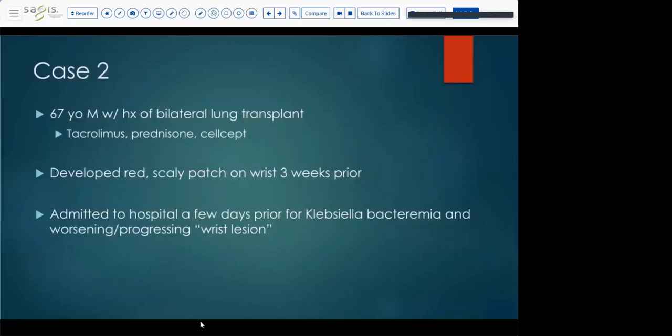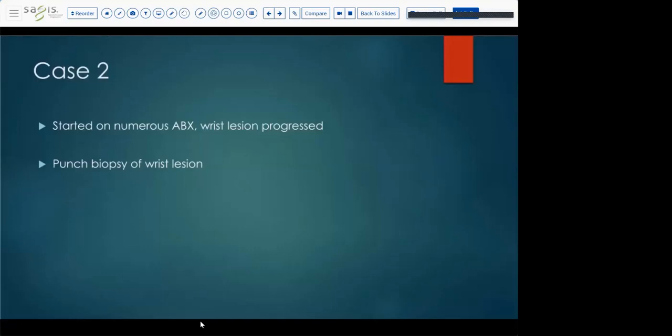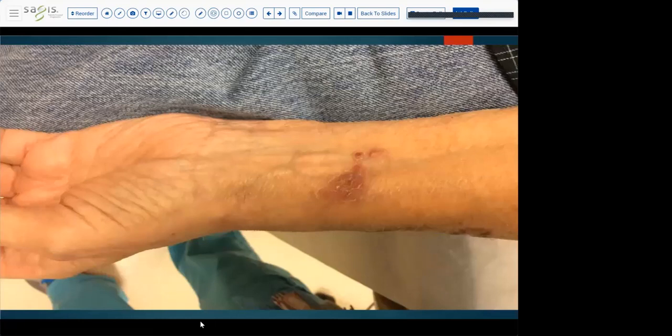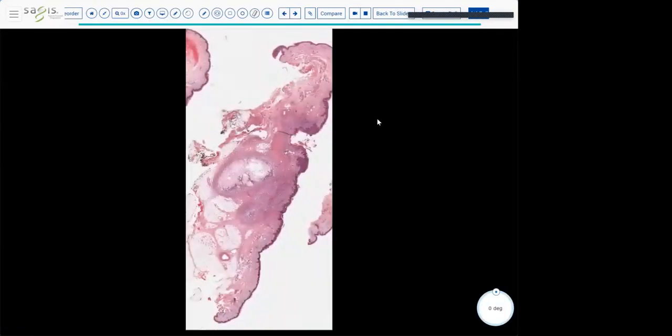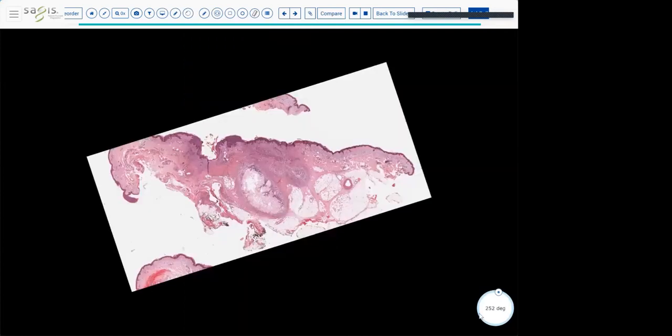Moving on to the second case, this was a 67-year-old male with a history of bilateral lung transplant. You can see he was on different immunosuppressant medications there. He developed this red scaly patch on his wrist three weeks prior and was admitted to the hospital just a few days before he was seen, and had this worsening progressing wrist lesion. It was started on numerous antibiotics but the wrist lesion progressed. So they did a punch biopsy. Here's a picture of this angulated erythematous scaly patch that's there, just not healing despite antibiotics.